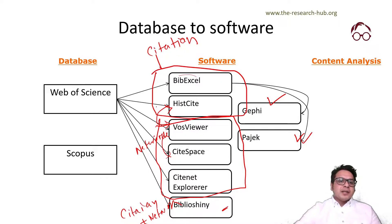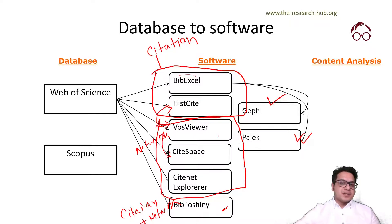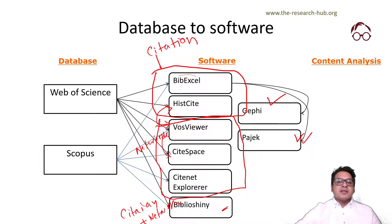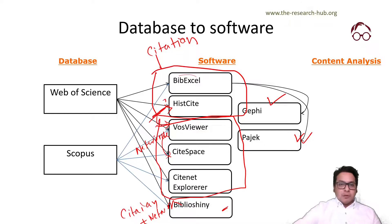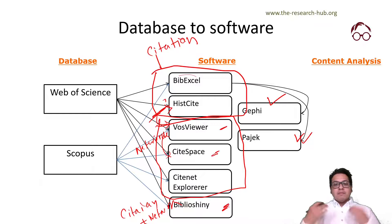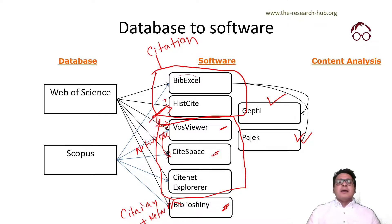Web of Science is compatible with all these softwares and many more. Scopus is compatible with all the softwares except HisCite. But that's okay because we don't recommend using HisCite anymore anyway — we recommend that you use VosViewer, Citespace, and BiblioShiny. If you can learn these three softwares, you don't really need HisCite.